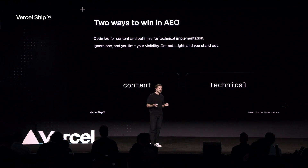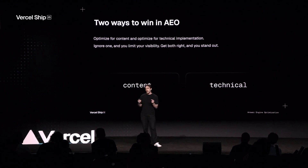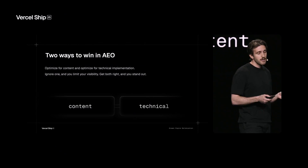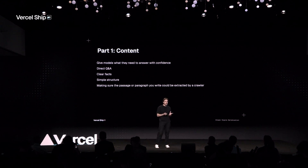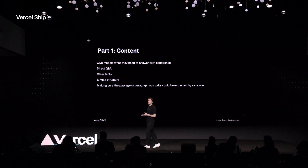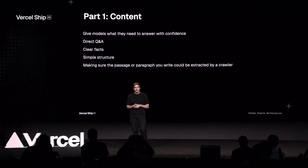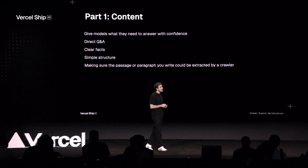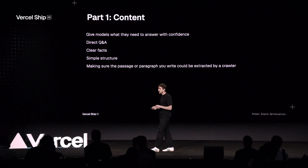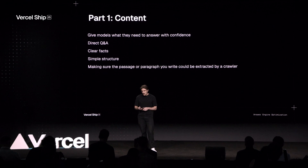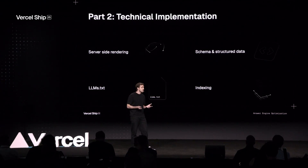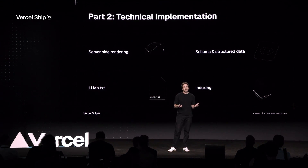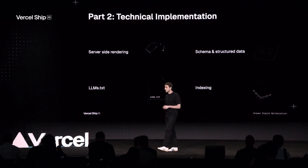In order to win in AEO, it comes down to two components: you have to win with both content and the technical implementation. If you only do one, your results are not going to stand out. But if you do both, you're going to be winning this game. On the content side, you want to structure and write your content so models can confidently answer questions. It's very important to optimize for the paragraph and not the page — make sure your content has structured Q&A, direct quotes and facts, and is easy for the model to use. More strategies are available on our blog at tryprofound.com.